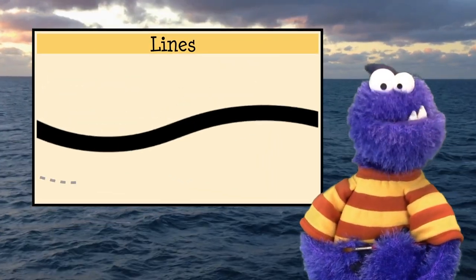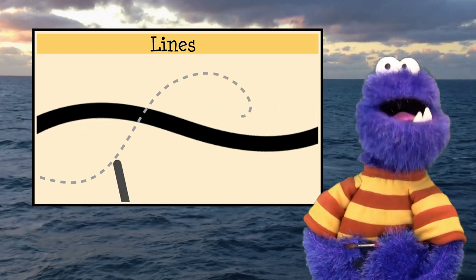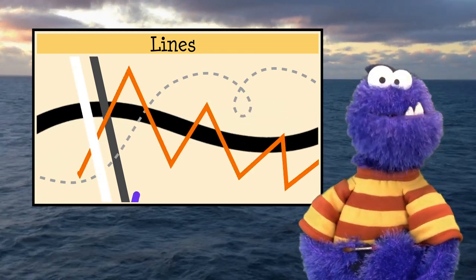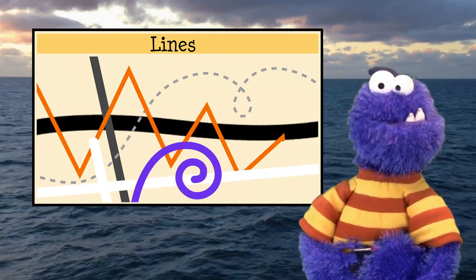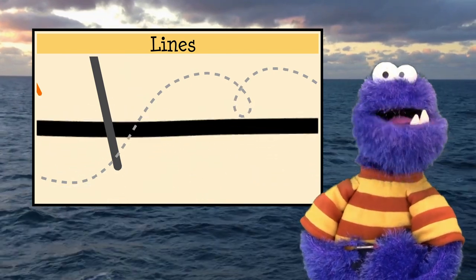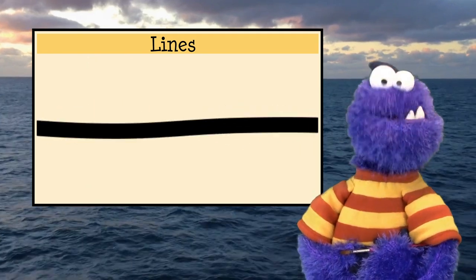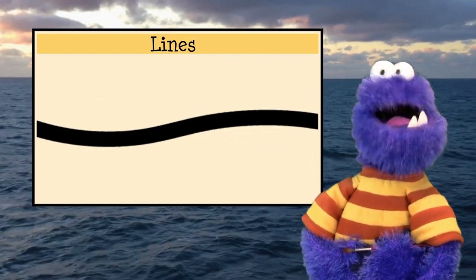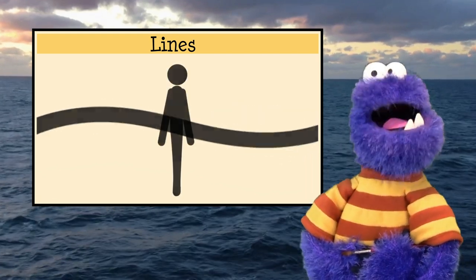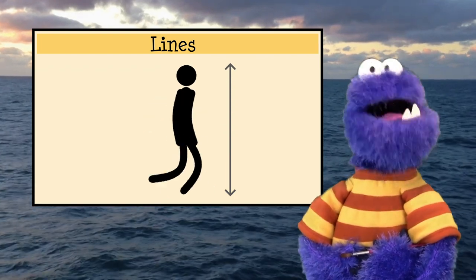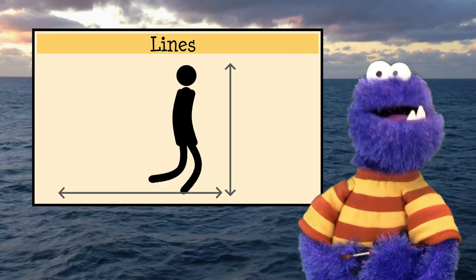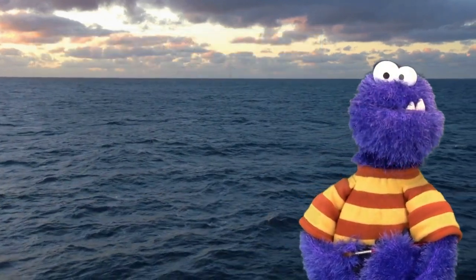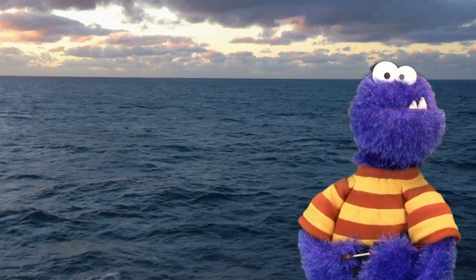Lines are interesting to me because lines don't actually exist in nature. We use lines on paper to describe the stuff that we see, but the lines themselves are an abstract idea. The edges of the forms that we see are usually the things that we turn into lines on the paper, but the lines themselves don't actually exist. Think about how weird that is — and think about how rare a straight line is in nature. Welcome to the closest thing nature shows us to a straight line: the ocean horizon.